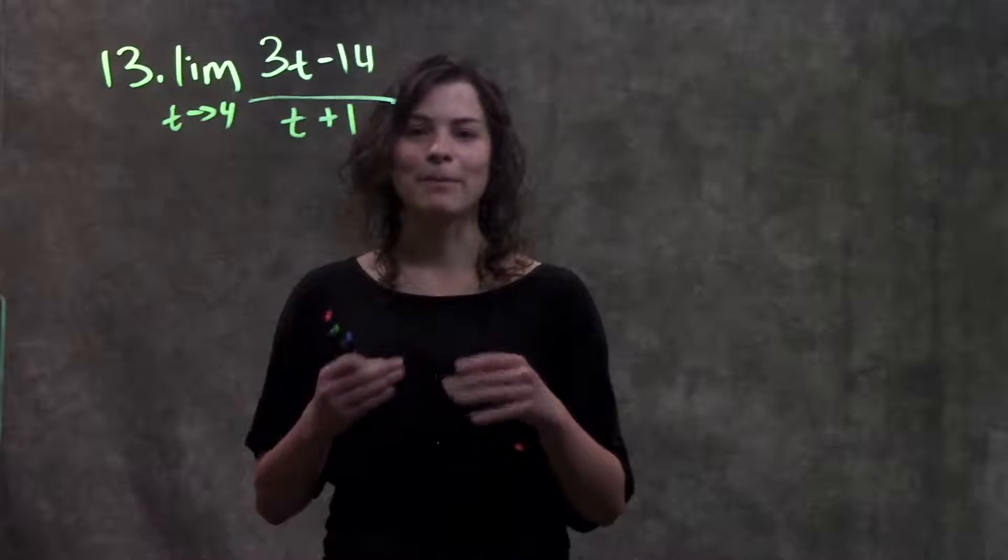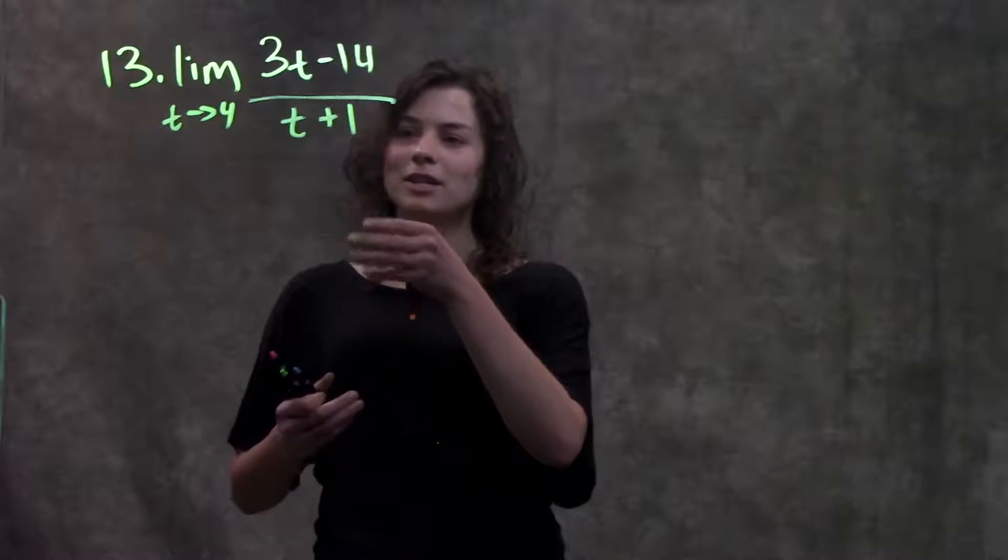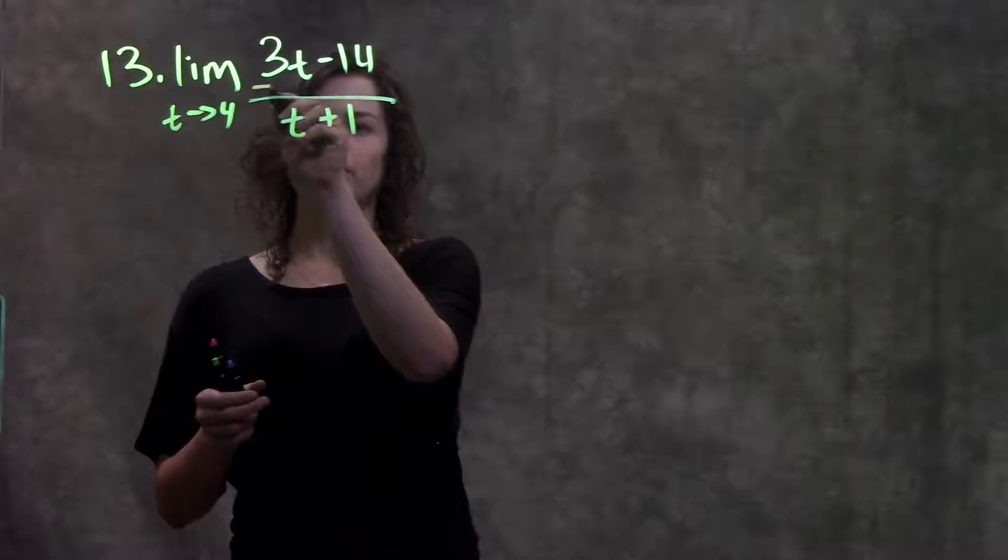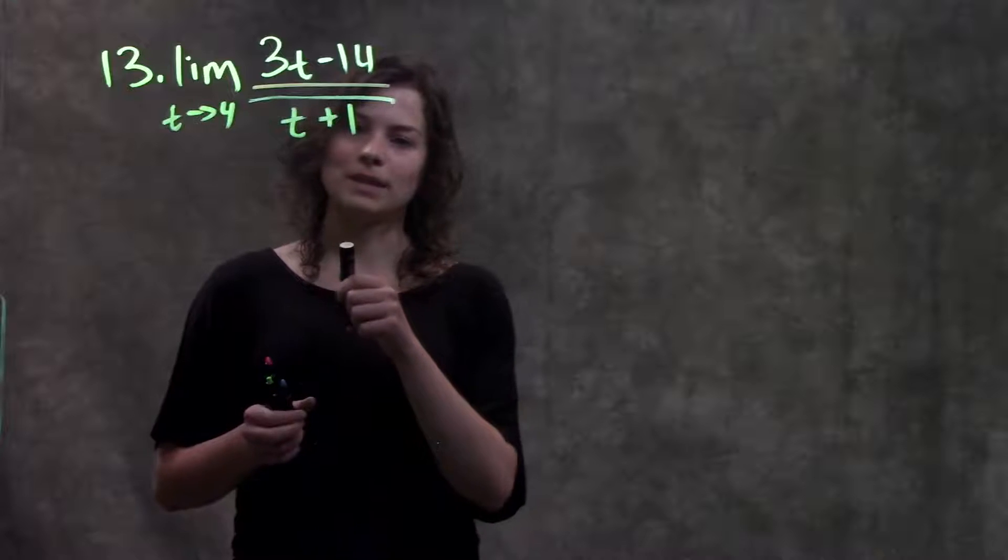So first, we're going to start with the first big part that we see. Looking at this function, the biggest part that I see is this thing divided by this thing. So I'm going to use my quotient rules and separate out the numerator from the denominator.